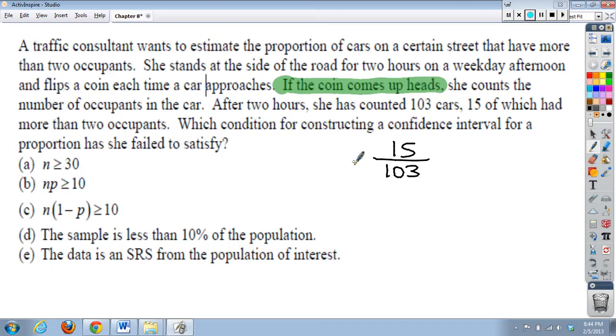Let's see. So she counted 103 cars, 15 of which had more than two occupants. Okay? So we could say this is our p-hat, 15 out of 103, which is approximately .1456. Now, is n greater than or equal to 30? Basically, this would meet, well, really would meet anything in a proportion problem. So, this really isn't something to satisfy that she hasn't failed, so it's definitely the wrong one.